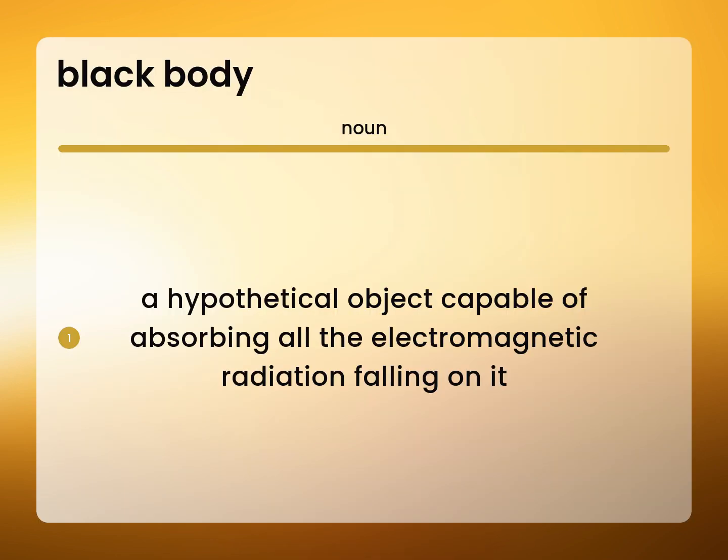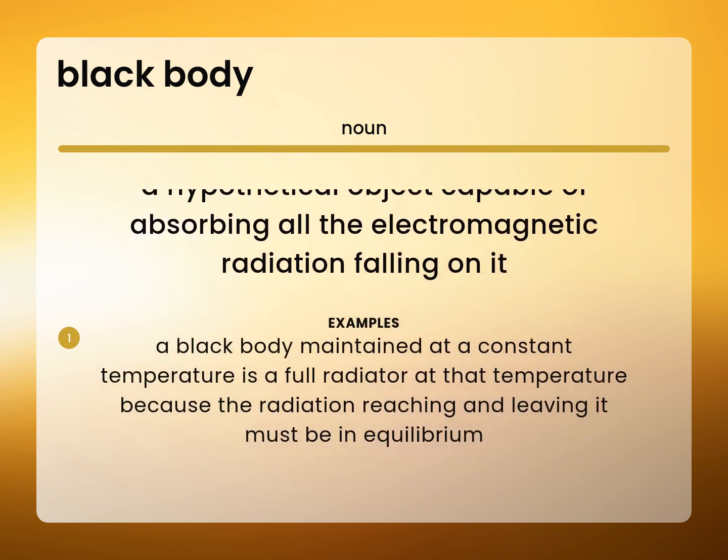A hypothetical object capable of absorbing all the electromagnetic radiation falling on it. A black body maintained at a constant temperature is a full radiator at that temperature, because the radiation reaching and leaving it must be in equilibrium.